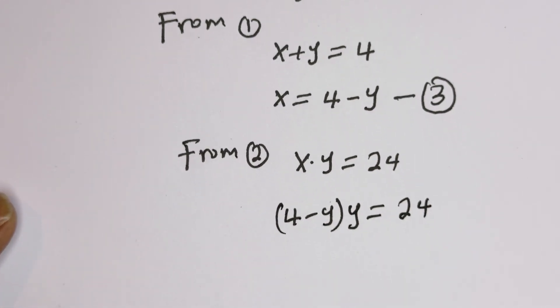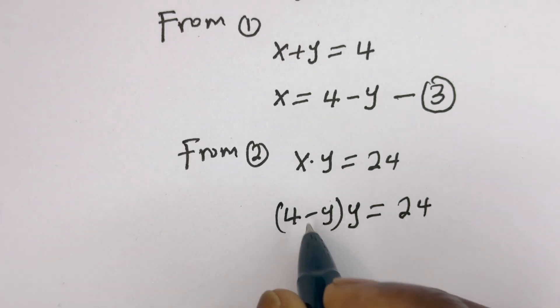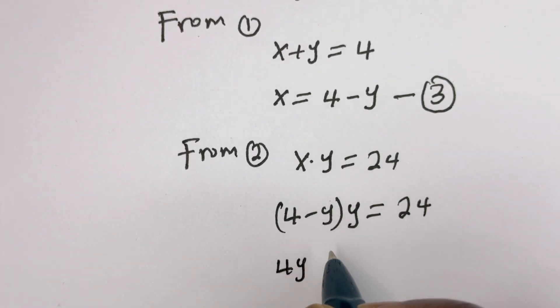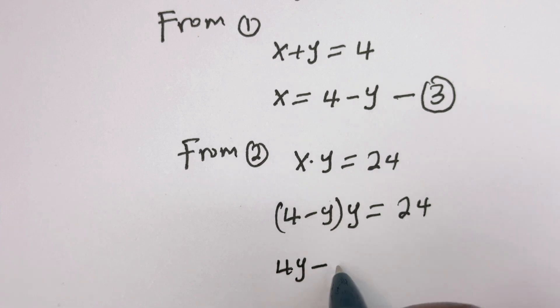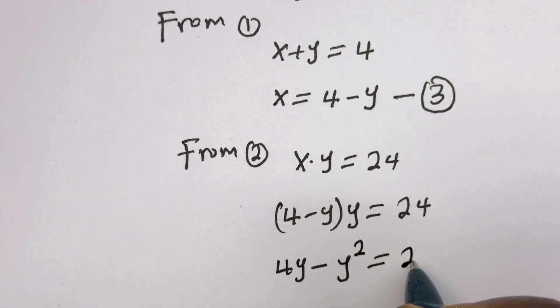Let's open the bracket: y multiplied by 4 is 4y, minus y times y, that is y squared, is equal to 24.